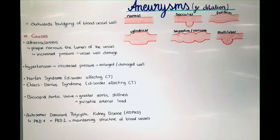Aneurysm comes from the Greek and means dilation, which also brings us to the definition. An aneurysm is the outward bulging of a blood vessel wall. There are different causes for that.